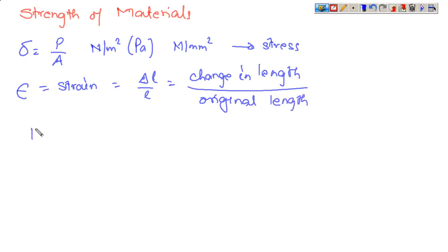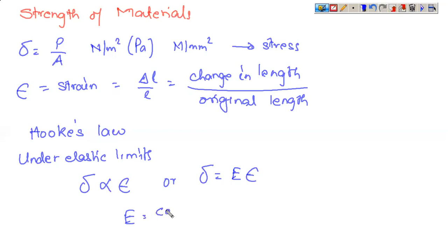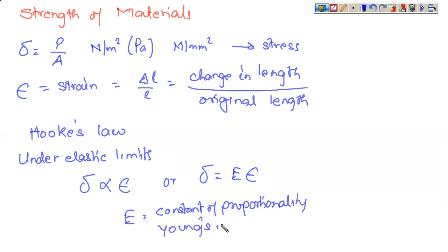There is Hooke's law governing this stress and strain relationship. Hooke's law states that under elastic limits, stress is directly proportional to strain. This statement 'under elastic limits' must be written because stress is not directly proportional to strain under every condition — only under elastic limits. This can be written as stress equals E into strain, where E is called the constant of proportionality, or Young's modulus, and also called elastic modulus.